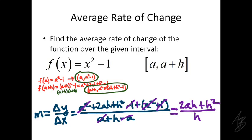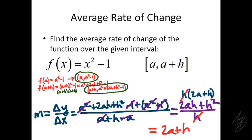There is one more simplification we can do. We have h in both terms in the numerator, so we factor out an h to get h(2a plus h) on top, over h on the bottom. We can cancel the h's — making the assumption that h is not equal to 0, so we're not dividing by zero — and we get 2a plus h as our average rate of change.